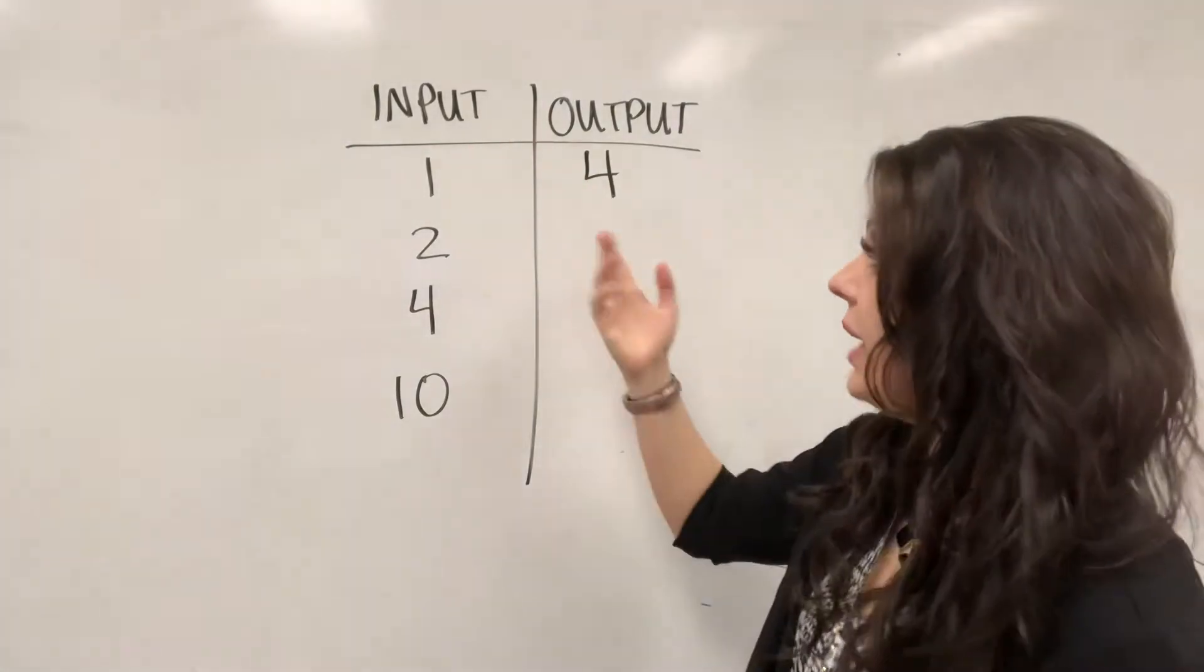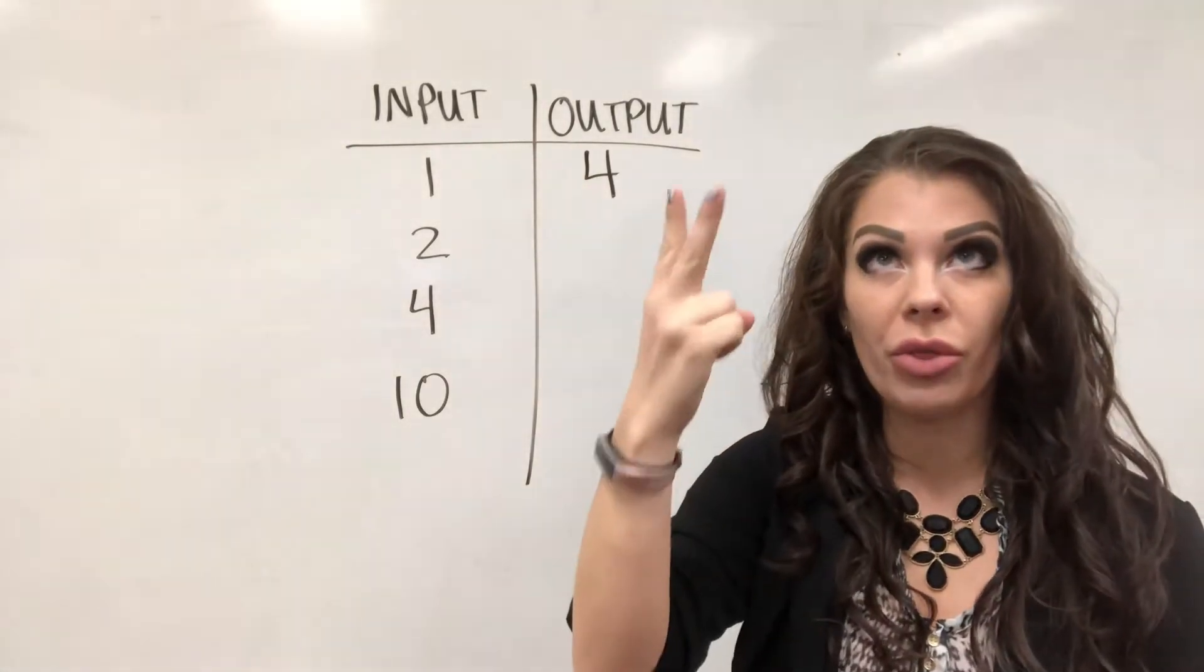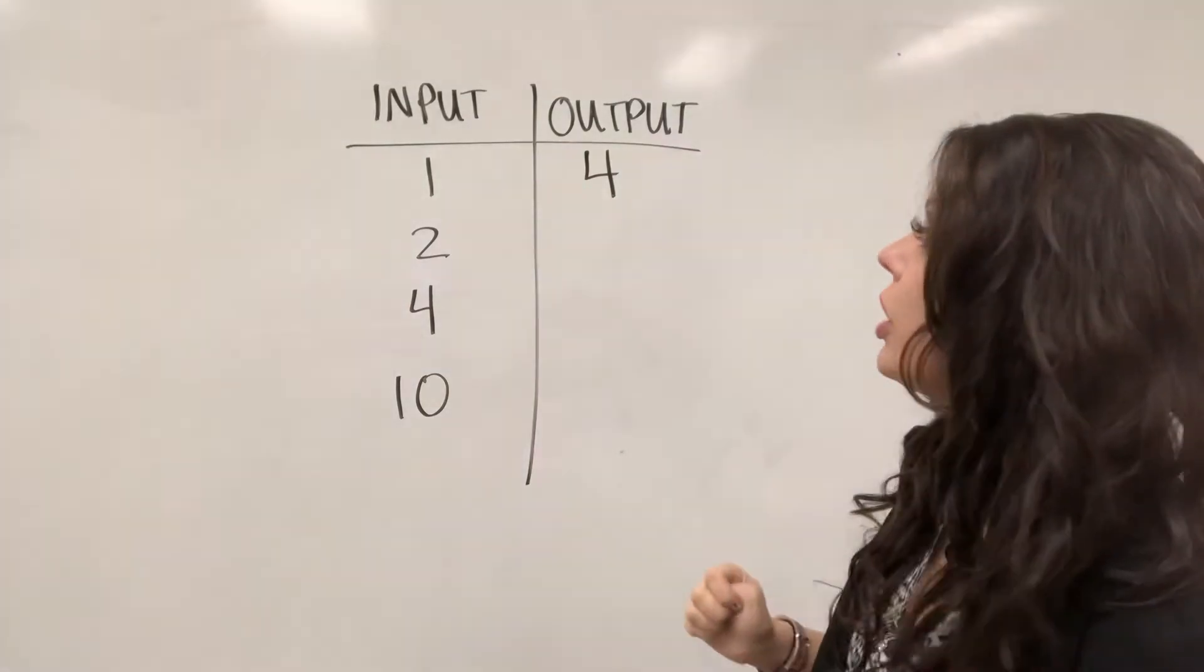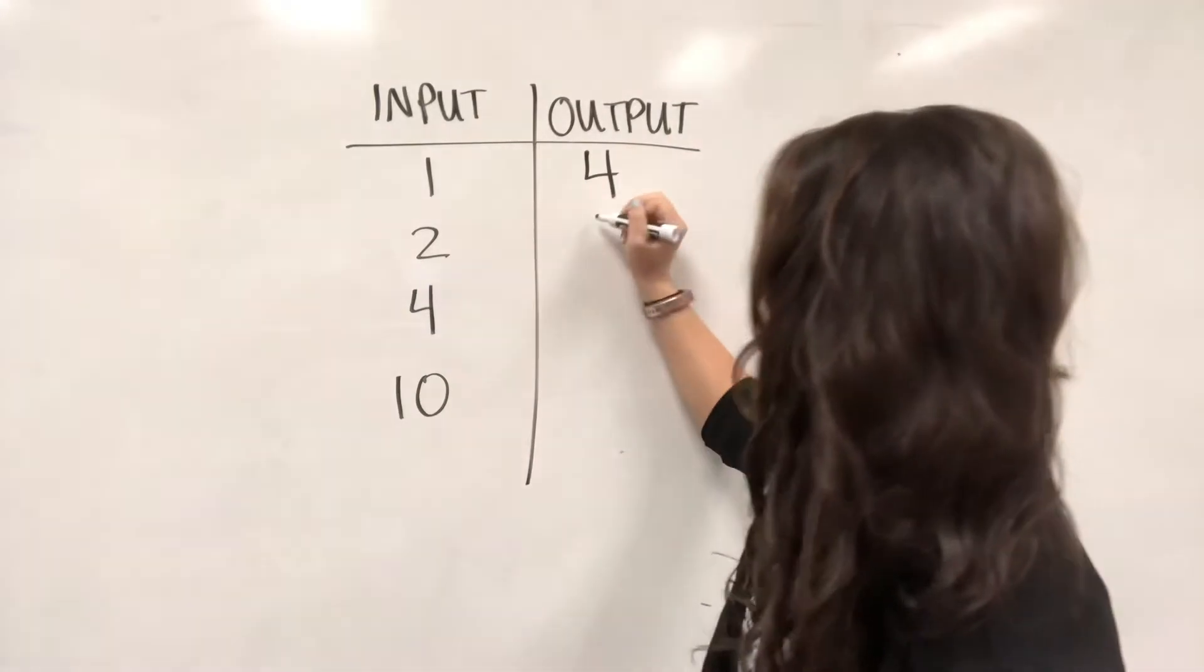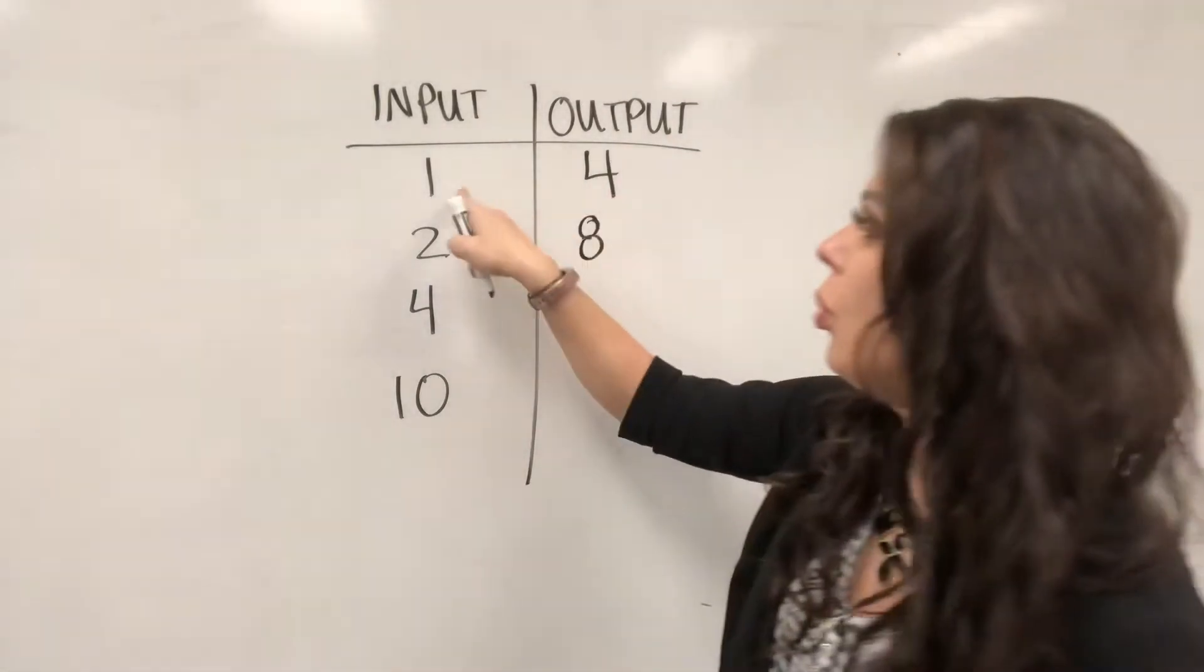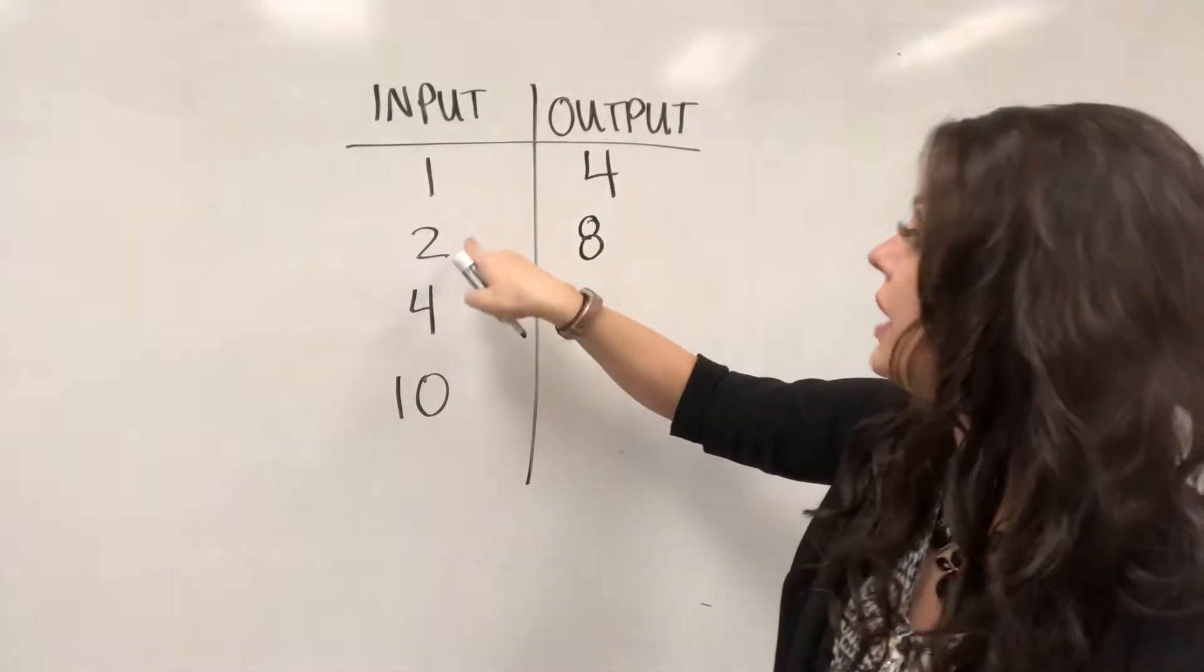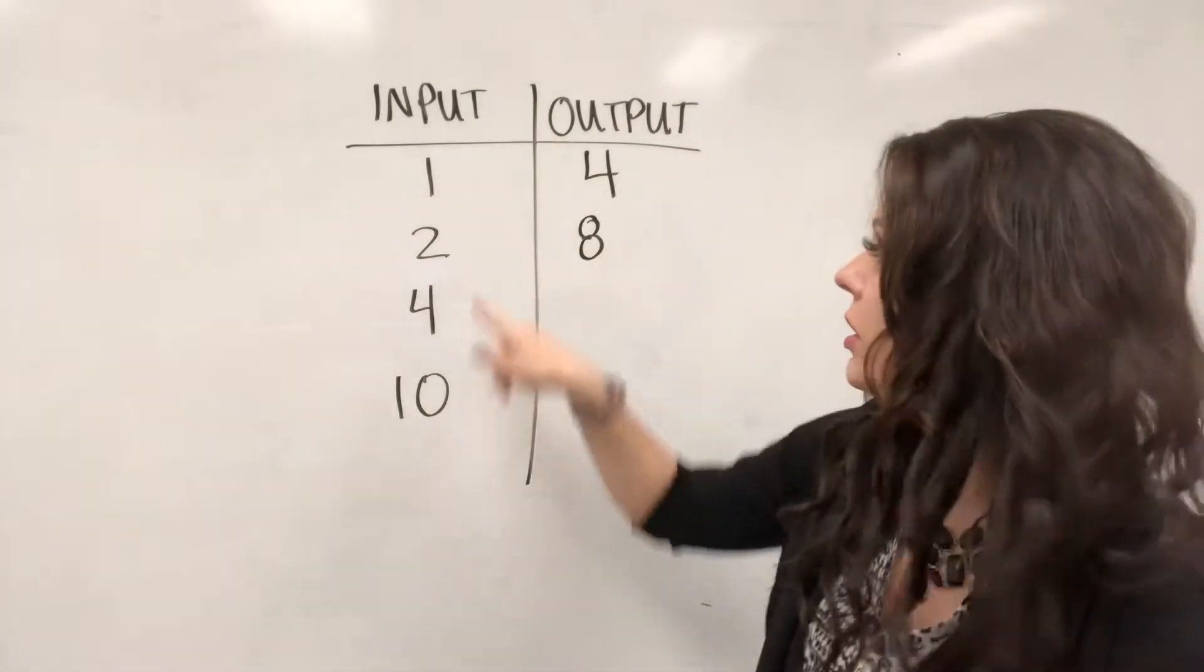Well, I could have added 3: 1, 2, 3, 4, right? Or I could have multiplied by 4. Those are my two kind of options. So what if I had 1 turned into 4 and 2 turned into 8?